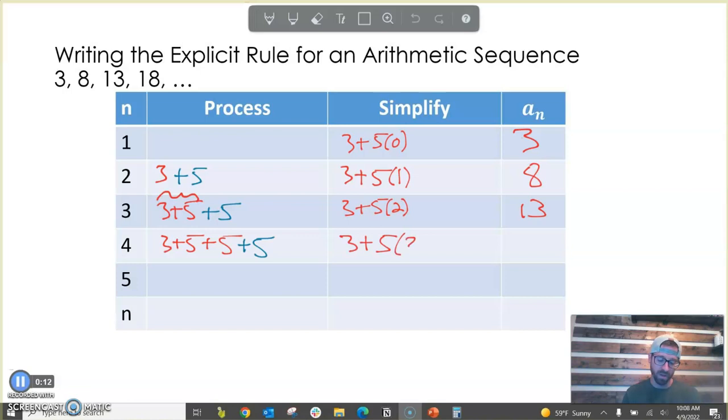Or in other words, we do 3 plus 5 times 3, which would give us our 18. And I think by this point, you can see the pattern. To do the fifth term, we're going to take the term before it and add 5 a fourth time to give us 3 plus 5 times 4, or 23.